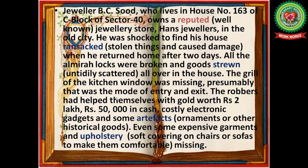The robbers helped themselves to gold worth rupees two lakh, rupees fifty thousand in cash, costly electronic gadgets, and some artifacts — meaning ornaments or other historical goods. Even some expensive garments and upholstery is missing. 'Upholstery' means the soft covering on chairs or sofas to make them comfortable. This paragraph covers the next outline point: damage and losses.